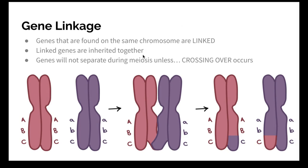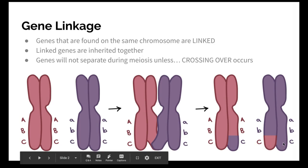During anaphase two of meiosis when the chromosomes separate from one side to the other, if they're linked they will separate together, but if they cross over then they're no longer on the same side, so they'll end up in different cells.